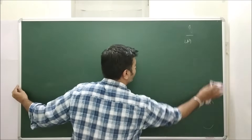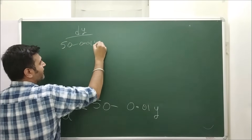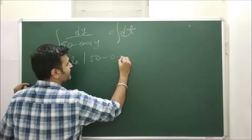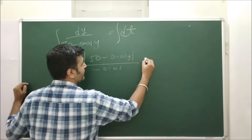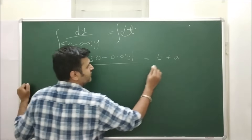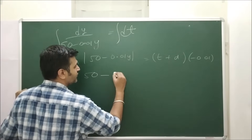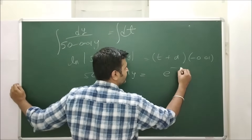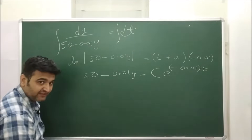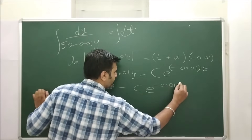Separating variables gives dy / (50 − 0.01·y) = dt. Integrating both sides: ln|50 − 0.01·y| / (−0.01) = t + d. Multiplying through by −0.01 and taking the exponential of both sides gives 50 − 0.01·y = e^(−0.01·t + d). Writing e^d as a new constant c, we get 50 − 0.01·y = c·e^(−0.01t), so y(t) = 5000 − 100c·e^(−0.01t).